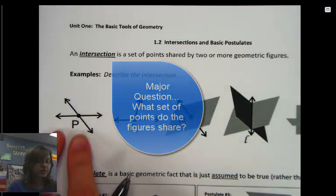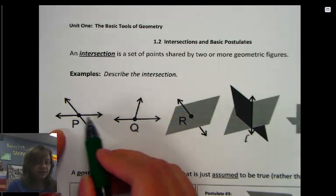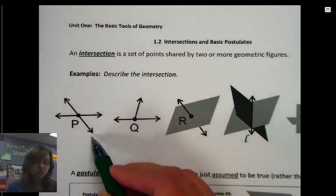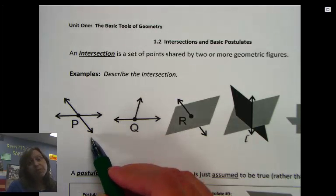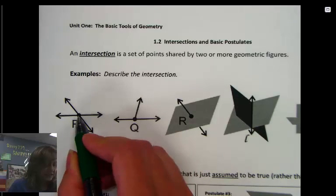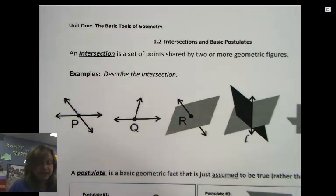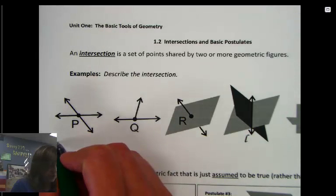What set of points do these two figures share? In our first one, we see two lines, and those two lines have crossed, making an intersection. So what is common or shared by both the lines? Well, in this case, these two lines share point P, so the intersection is point P.